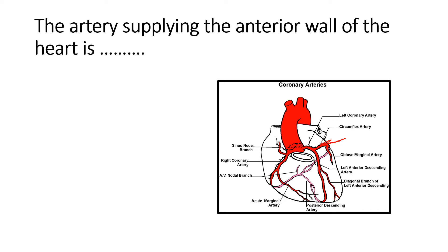The right coronary artery divides into the acute marginal and posterior descending artery. The posterior descending artery is usually part of the right coronary artery in the majority of individuals — these are called right dominant individuals. In some cases, the posterior descending artery arises from the left circumflex artery — those individuals are known as having a dominant left coronary artery system.